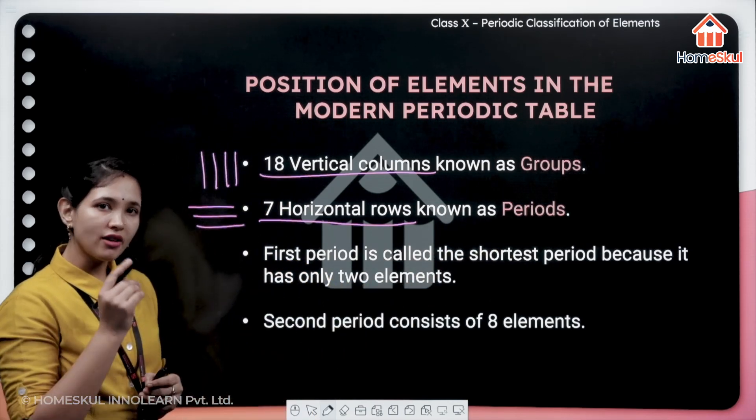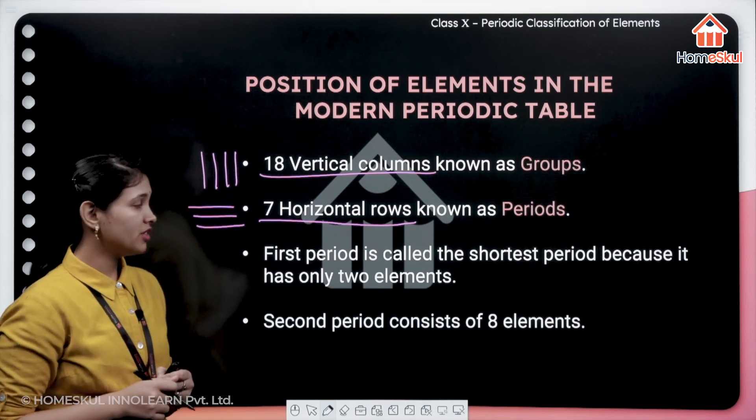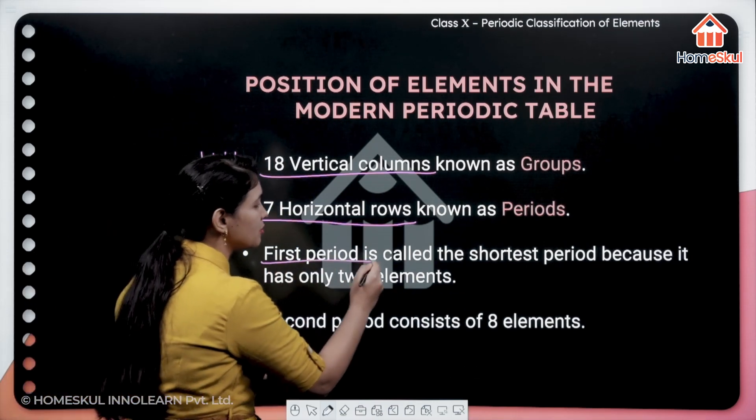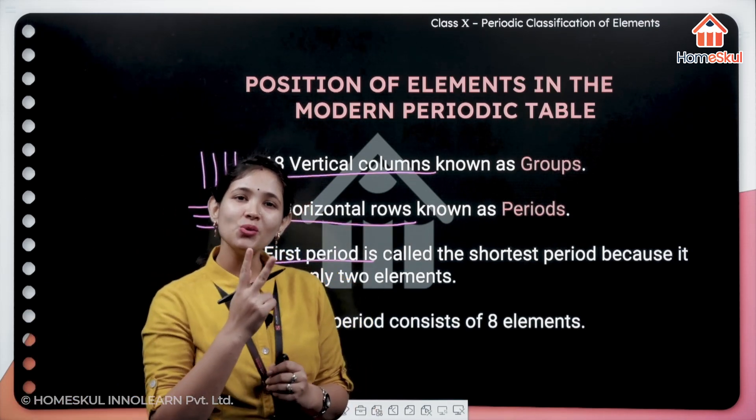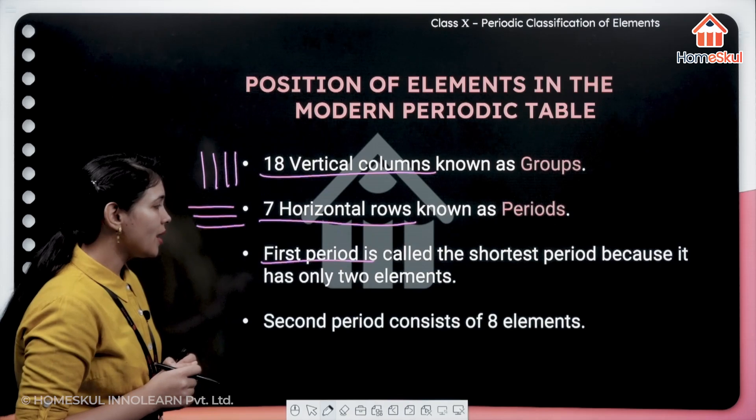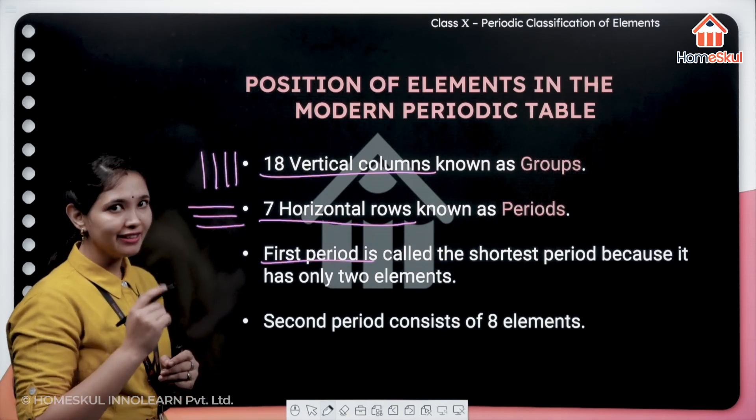The first period is called the shortest period. You need to remember this. The first period will be the shortest period just because it contains only two elements: hydrogen and helium.